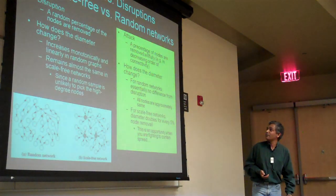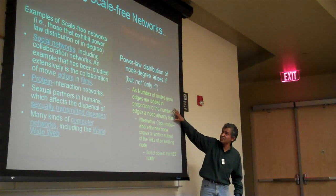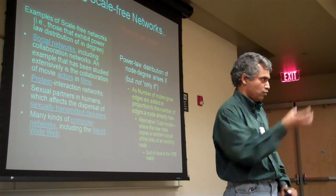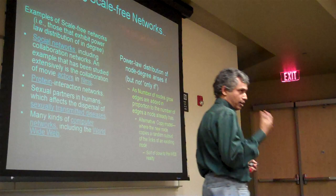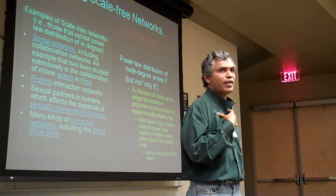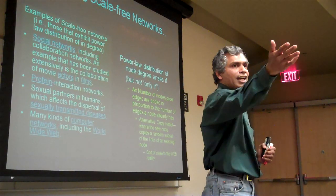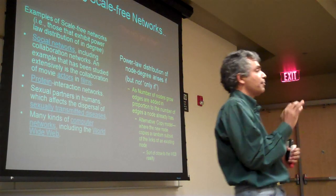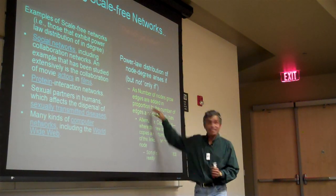The point is: you can use one model for generating power law distributions, which is essentially adding edges where the probability of adding an edge to a node is proportional to the number of edges it already has. Obviously in the beginning, if you start with a zero-edge node, the first node that becomes popular gets more and more popular — which is exactly how society works.